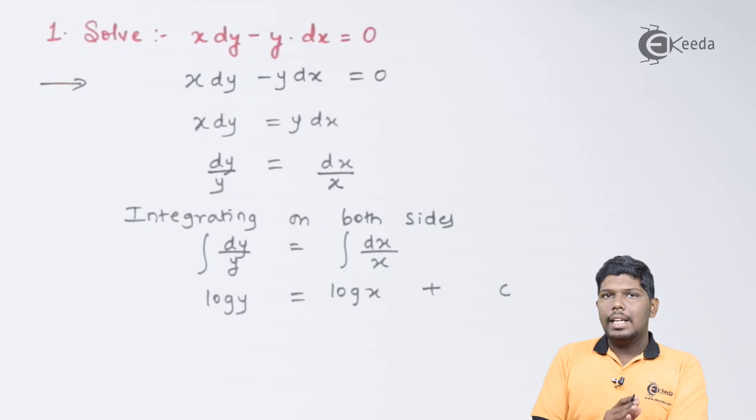Now, remember, if both x and y are present in terms of log, you can write constant as log c. Only when both x and y are in terms of log.